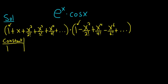Now we go to the x terms. Can we use the 1 to get an x term? There are no x terms on the right, so that won't work. Can we use the x? Yes — x times 1 is x. So that's an x term. x squared over 2 factorial can't give us an x term, so we're done with the x terms.